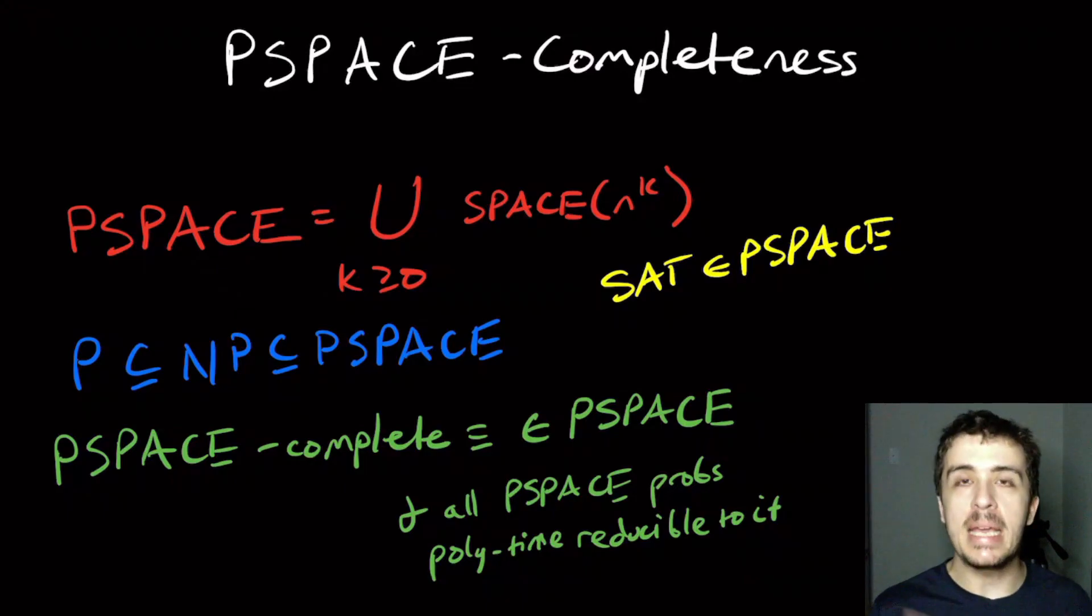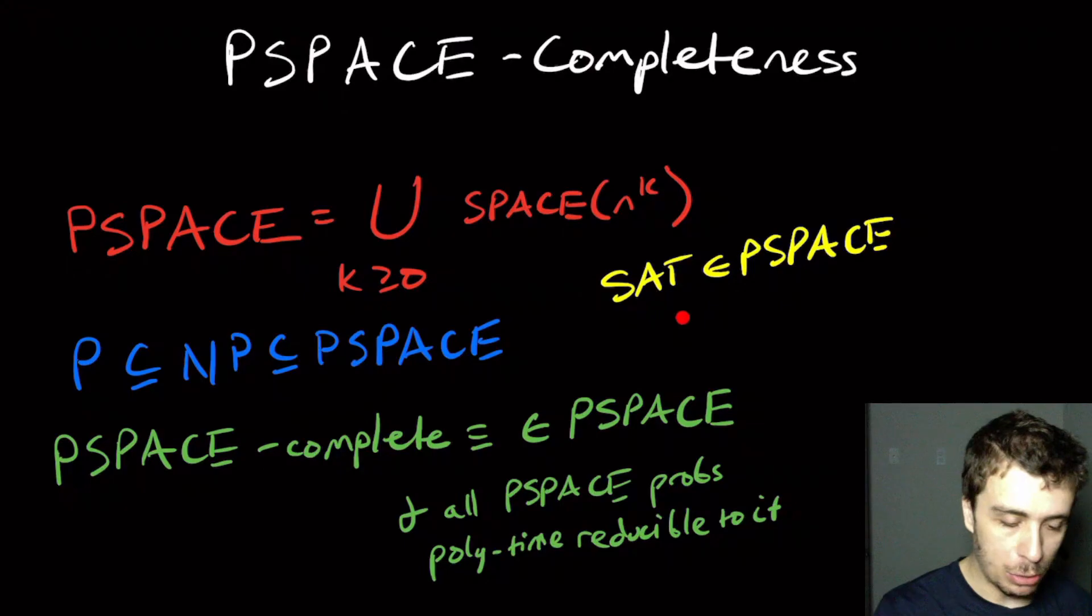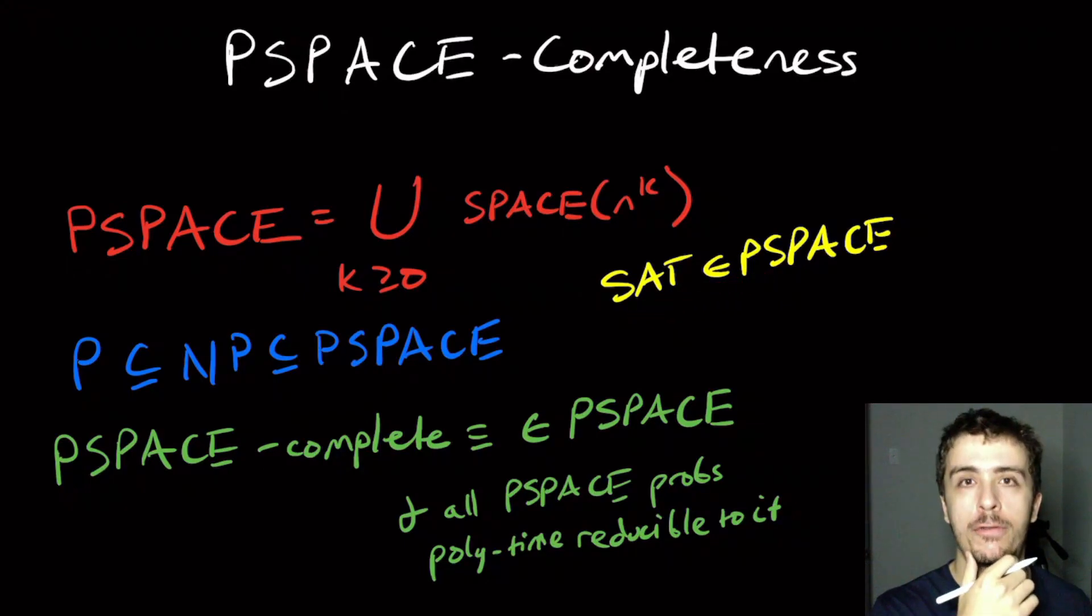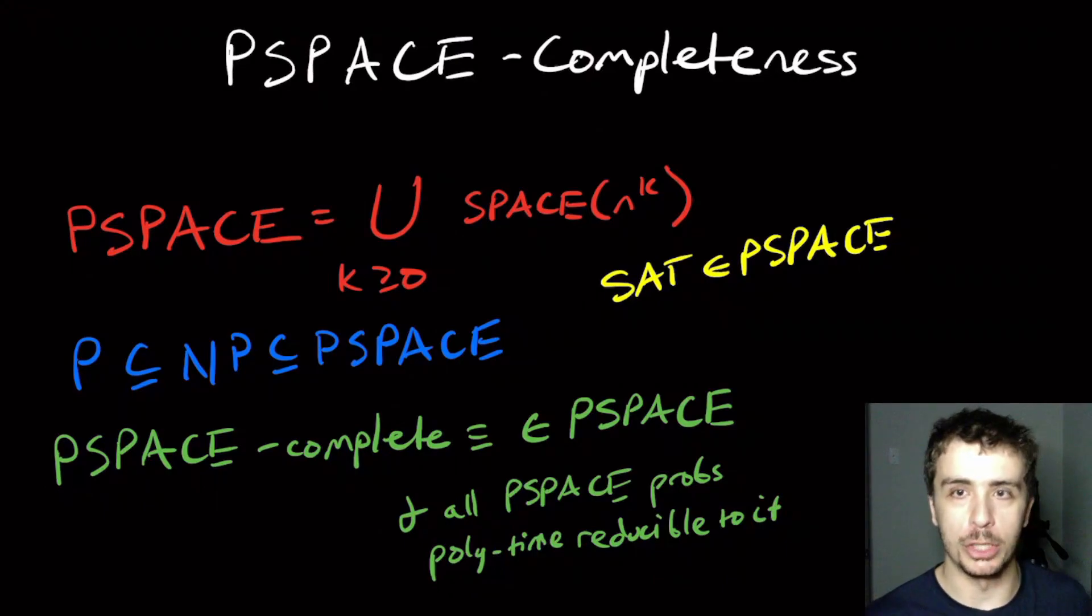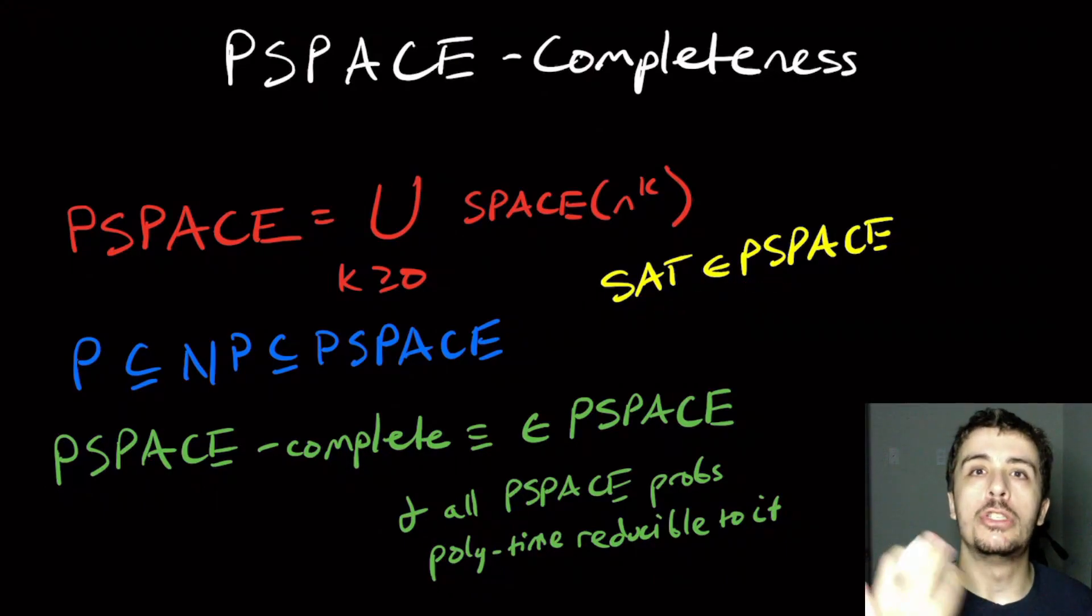Since SAT is NP-complete, we can take any other NP problem and reduce it to SAT, and we can run the polynomial space solution for SAT. Then we can get the answer for the other NP problem because the reduction only took polynomial time and hence only took polynomial space.